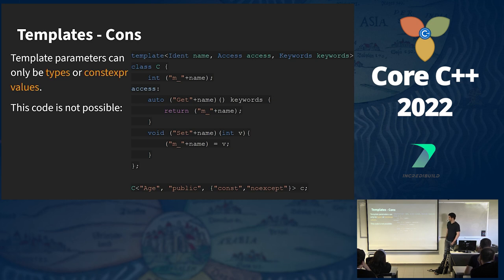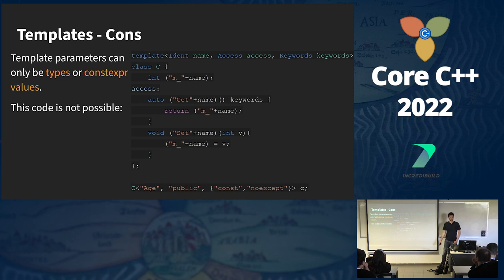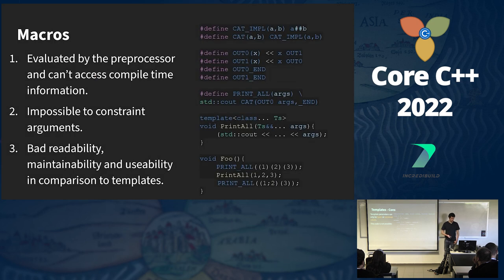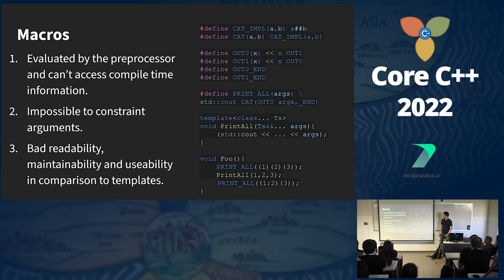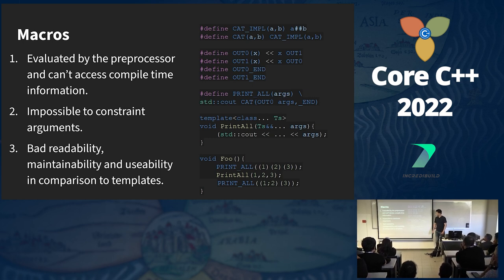Here we have an example of a template that takes a name, access specifier, and some keywords and uses it to generate a class with a data member, a getter, and a setter. But this code is not possible because it is not valid C++. Unlike templates, macros are evaluated by the preprocessor and can't access compile-time information. Also, it is impossible to constrain the arguments of macros because it is just text — everything is text — so we have no way to validate it.